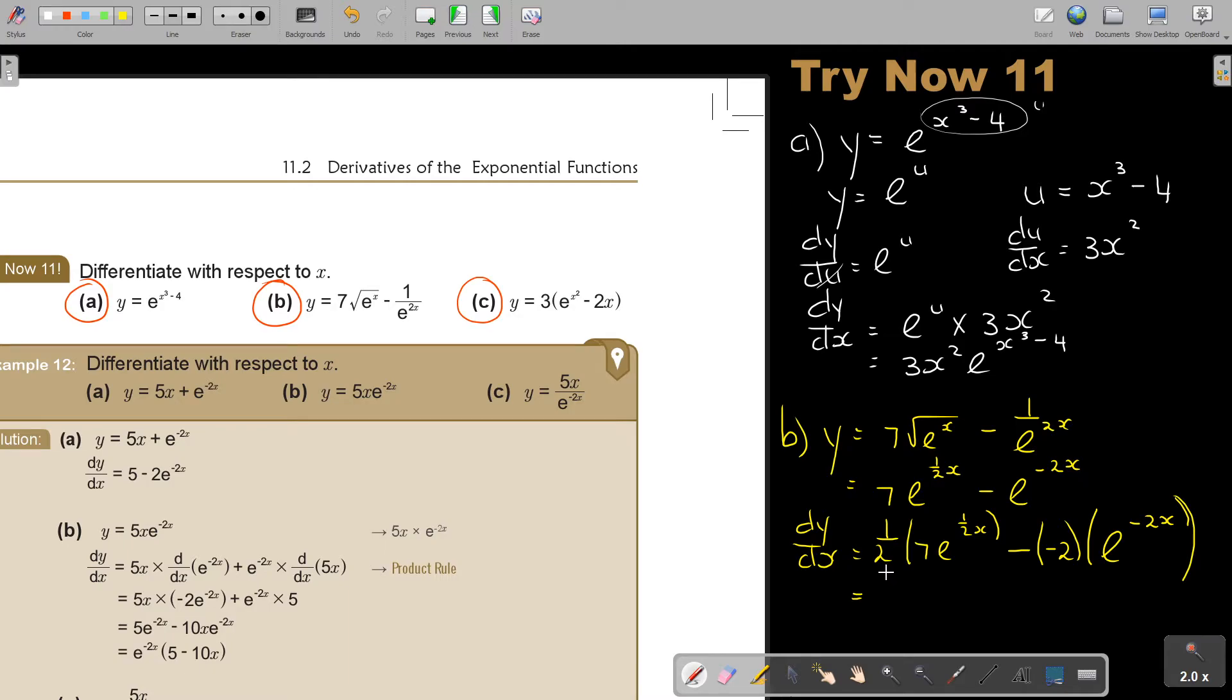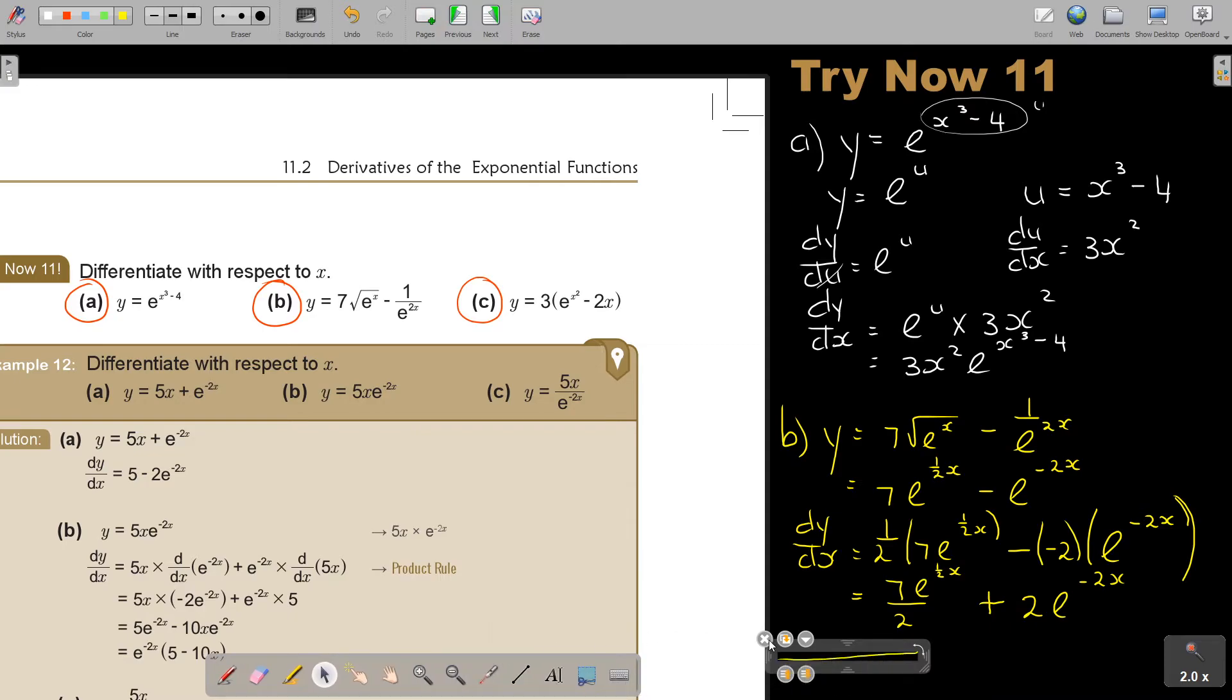And if I simplify this, this is going to be 7 over 2. This is going to be e to the power of x or x over 2 plus this is going to become a positive 2 and e to the power of negative 2x. You can also write it as 7 over 2. If you want, you can bring this one down. But that is your other option.